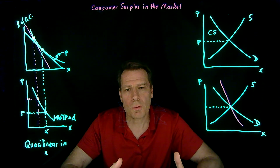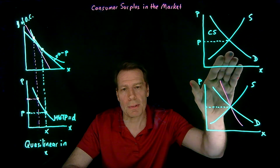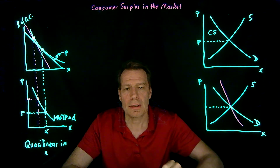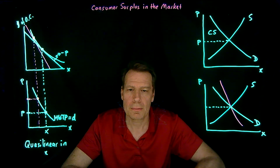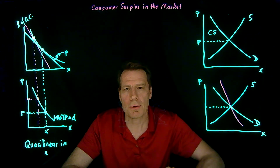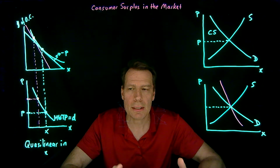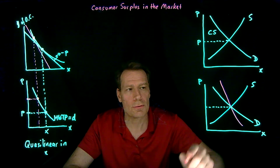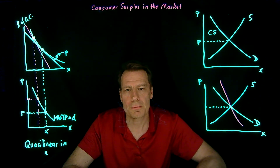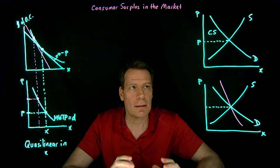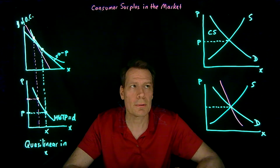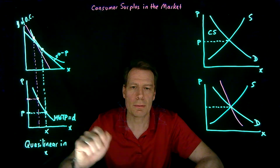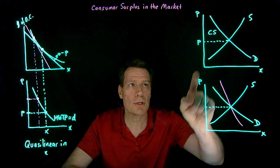Under the assumption of quasi-linear tastes, not only does the picture become simple, but it remains exactly identical even if we redistribute income between people. That's not true in the more general case, where redistributing income shifts individual demand curves, shifting the market demand curve and changing the equilibrium price. But in the quasi-linear special case, redistributing income between people does not shift the market demand curve and therefore would not change the market price.